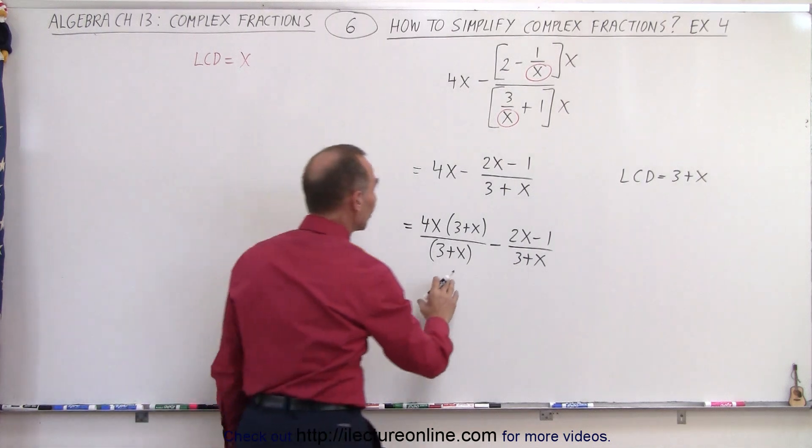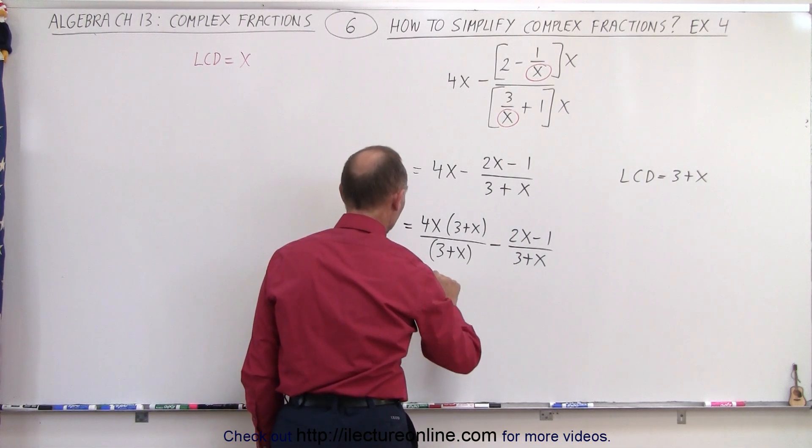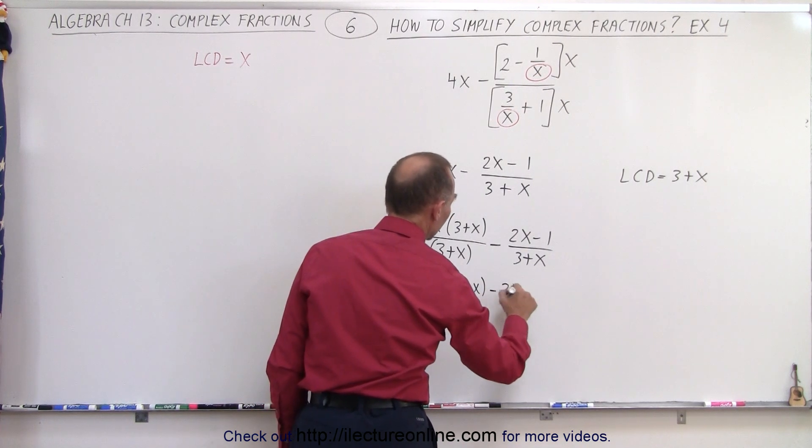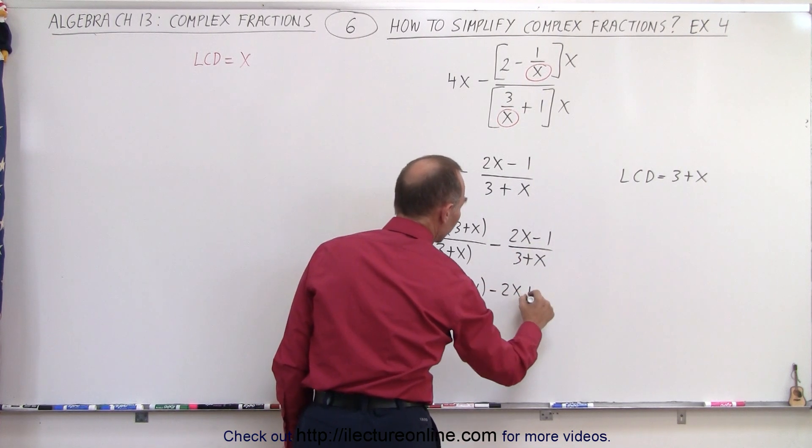We can write all that over the same denominator, so this is equal to 4x times 3 plus x, minus 2x, minus times the minus becomes plus 1.